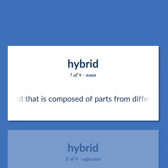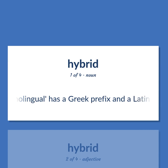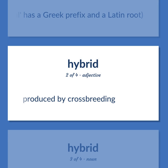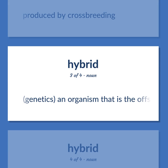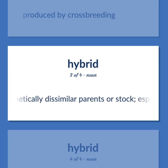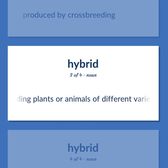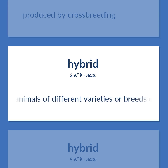HYBRID — A word that is composed of parts from different languages; e.g., 'monolingual' has a Greek prefix and a Latin root. Also: produced by crossbreeding. In genetics, an organism that is the offspring of genetically dissimilar parents or stock, especially offspring produced by breeding plants or animals of different varieties, breeds, or species.